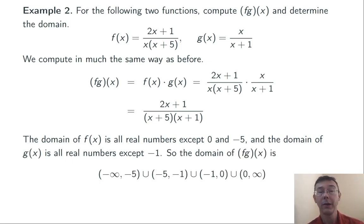So in order for a value x to be in the domain of f times g, it has to be in both of those domains. So the domain of f times g is going to be all real numbers except for 0, negative 1, and negative 5. Here I have it written in interval notation.